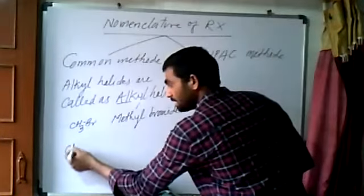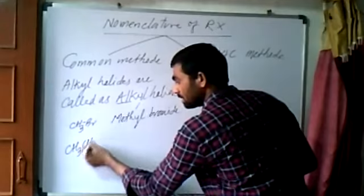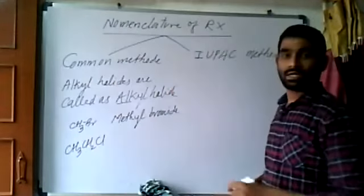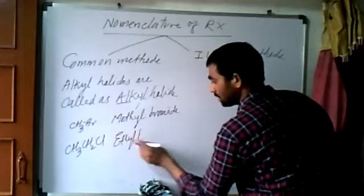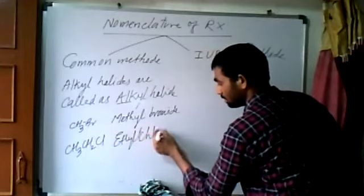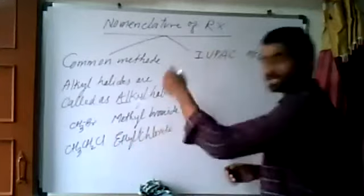If I write CH3CH2Cl, it is ethyl bromide. Sorry, ethyl chloride. It is ethyl chloride. We are discussing only common method.